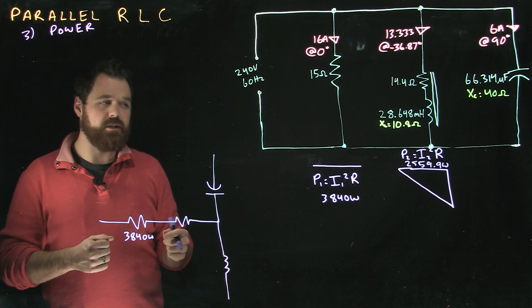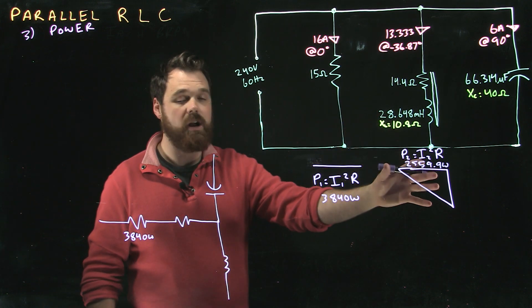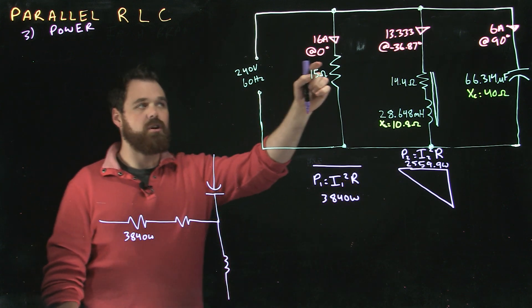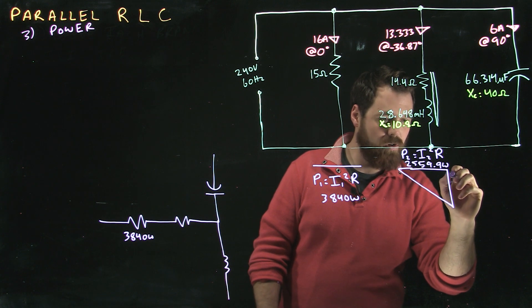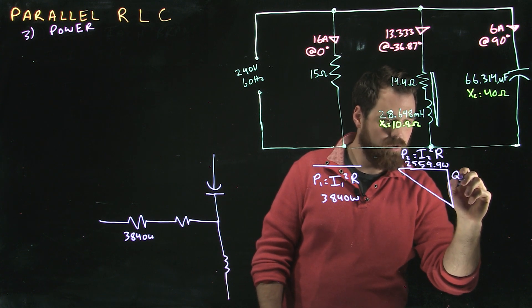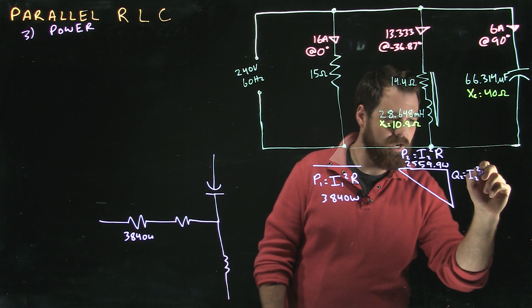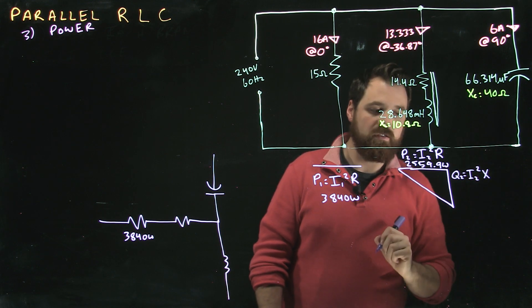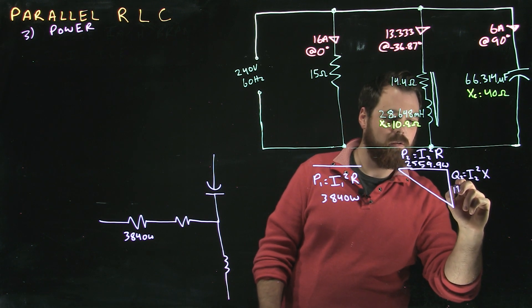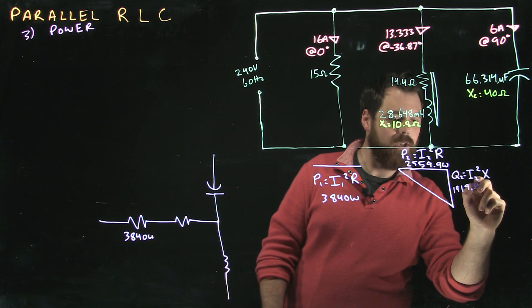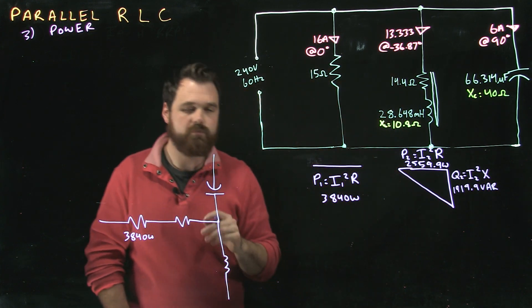Now I can go a couple places from there. I can use my power factor from my previous triangle when I did the Z, but my preferred way is I'm going to use the current squared times the reactive component. So I'm going to go Q2 equals I2 squared times X in this case, and I get 1919.9 Vars. Perfect.